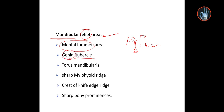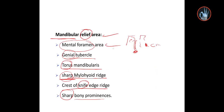We also have the genial tubercle, the torus mandibularis — which is similar to the torus palatinus we talked about on the maxillary — found on the premolar area lingually. We also have the sharp mylohyoid ridge, the knife-edge ridge, and sharp bony prominences. We will consider the mental and genial tubercle and the torus palatinus and torus mandibularis.